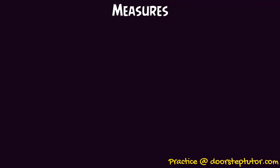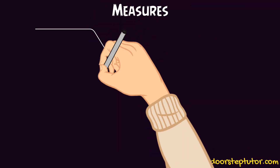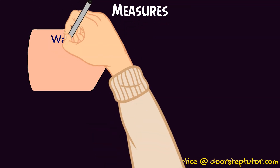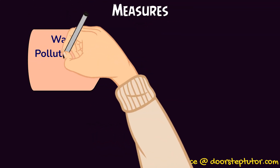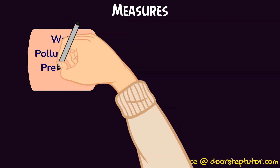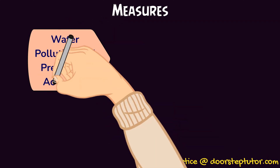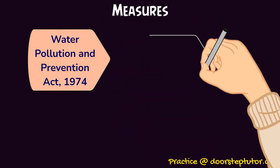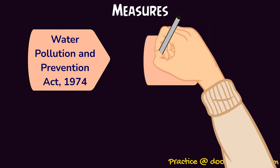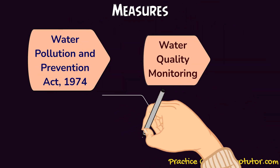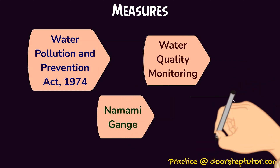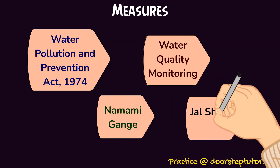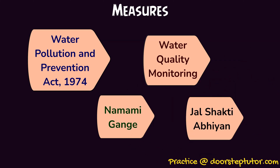What are some measures that can be taken with respect to water pollution? From the government side: the Water Pollution and Prevention Act of 1974, Water Quality Monitoring, Namami Ganga, and Jal Shakti Abhiyan are some of the government initiatives.